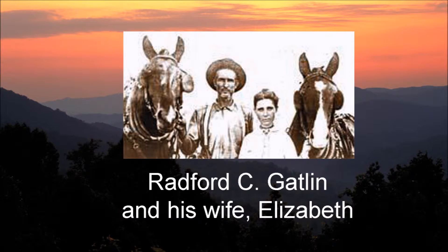The story of how the name evolved into Gatlinburg involves a controversial figure who settled there in 1854. Radford C. Gatlin opened a general store in town and established a new post office there in 1856. Thus, the town's name was changed from White Oak Flats to Gatlinburg. Many accounts remarked that Gatlin was a flamboyant preacher and even started his own Gatlinite Baptist Church.